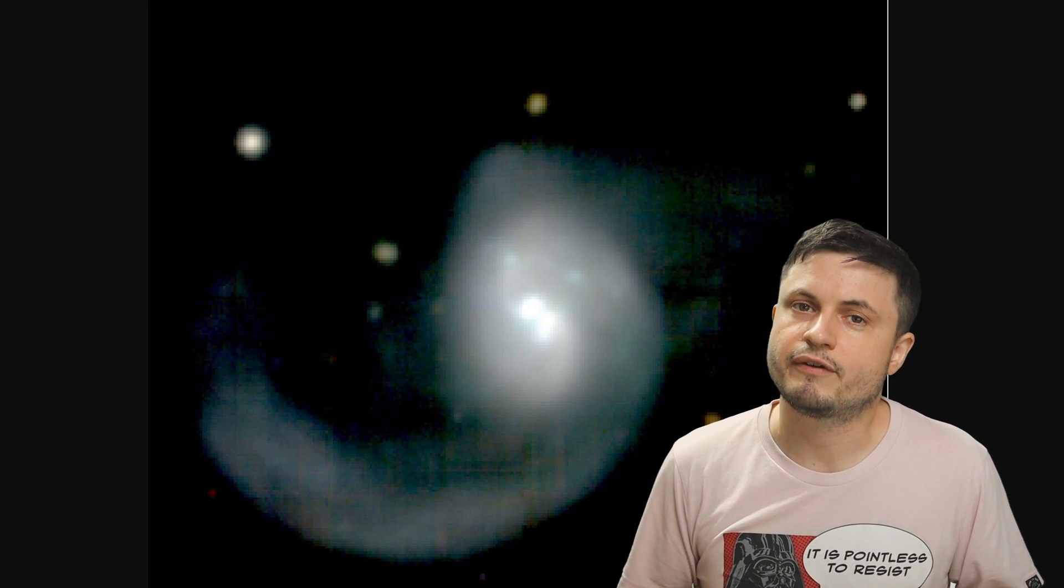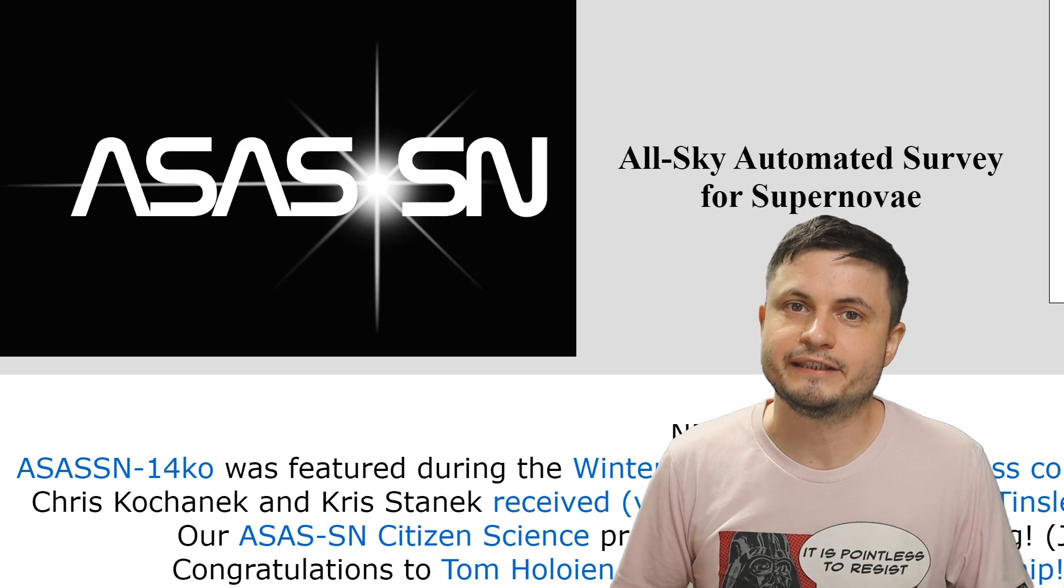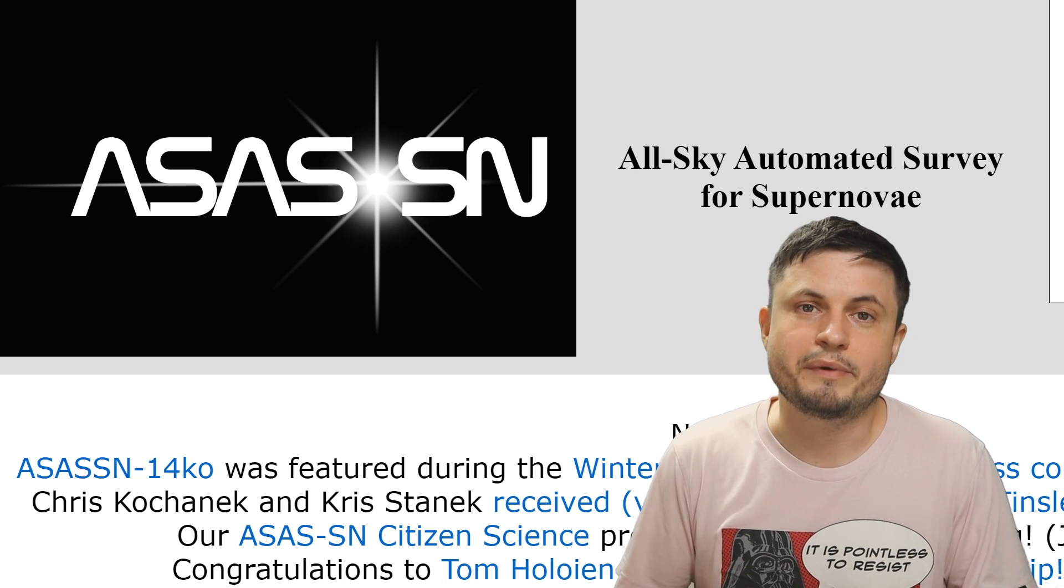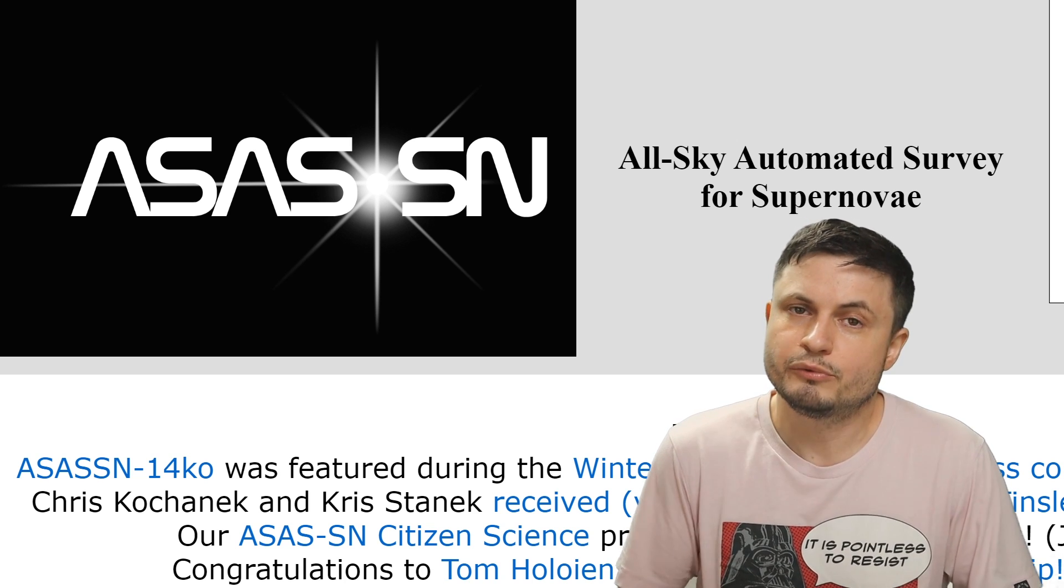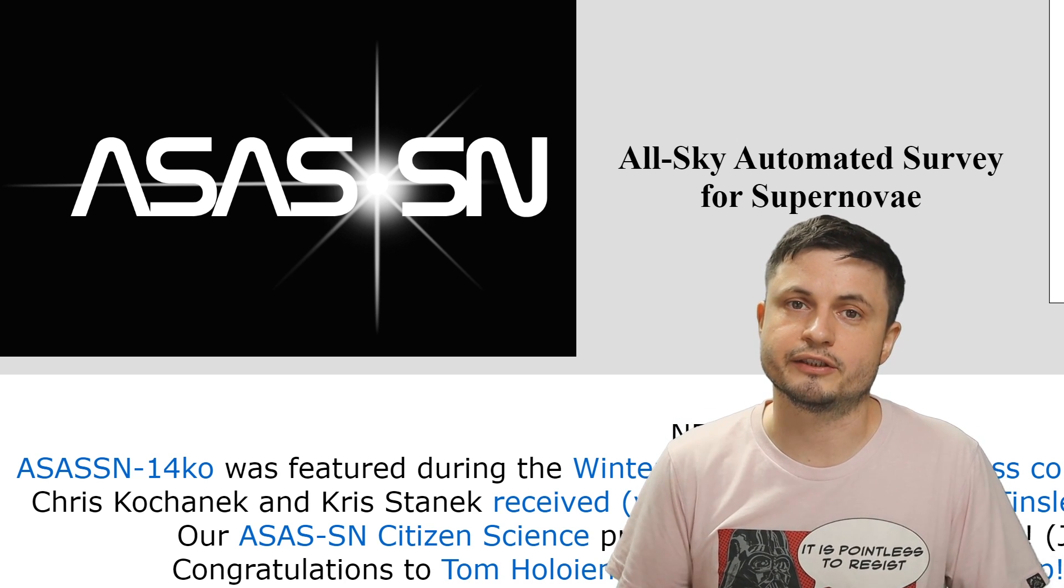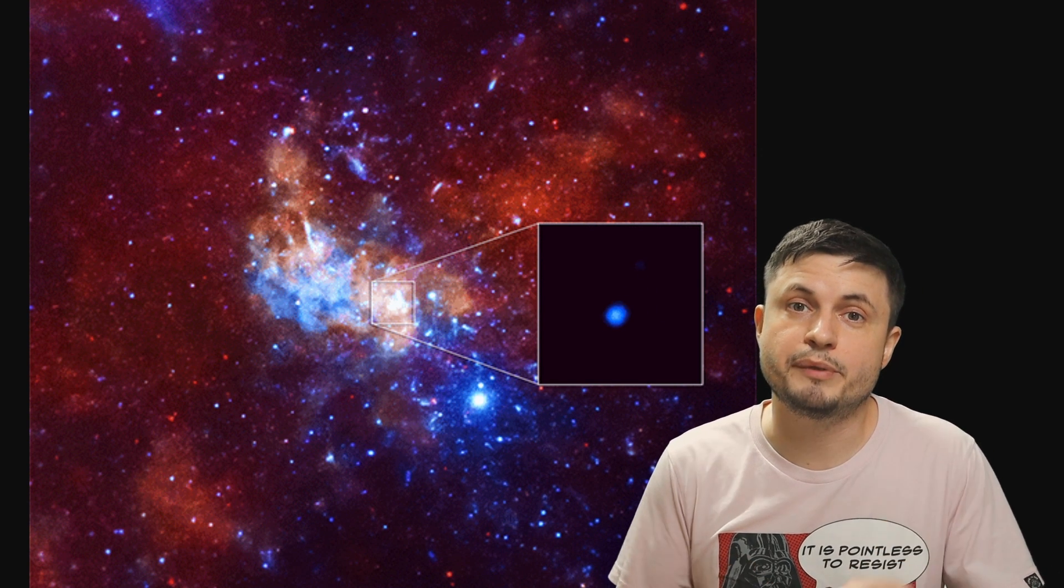And this time it's in this galaxy you see right here known as ESO 253-3. It's located roughly around 500 million light years away from us. And roughly around six years ago, back in November of 2014, the automated system known as ASASSN or All-Sky Automated Survey for Supernova was able to detect a potential supernova in this region. In other words, a potential supernova was detected in the middle of this galaxy.